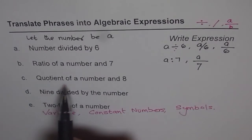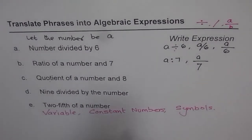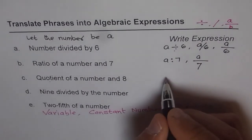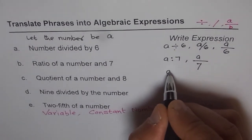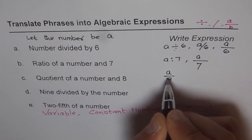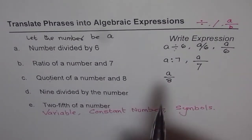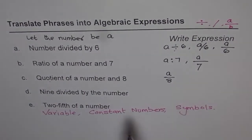Next one is quotient of a number and 8. Quotient means you are dividing that number by 8. That is what it means. So the number is a for us, a divided by 8. That is what it means. Quotient of a number and 8. That means divide the number by 8.